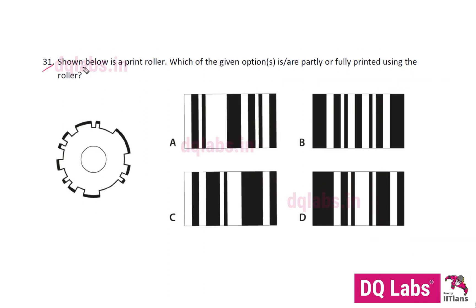Question number 31. Shown below is a print roller. A roller prints. Which of the given options is or are partly or fully printed using the roller?